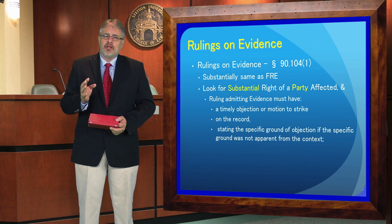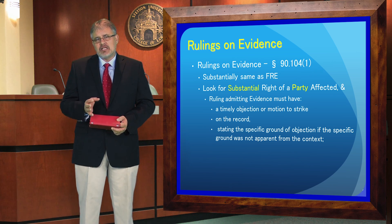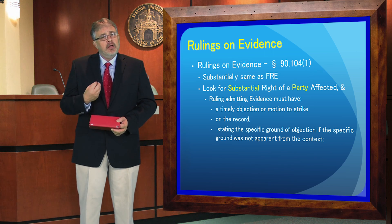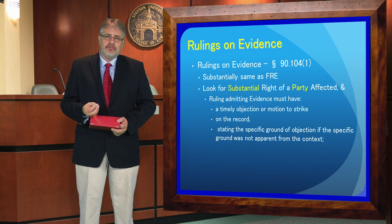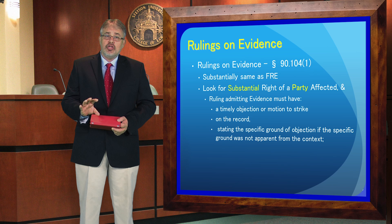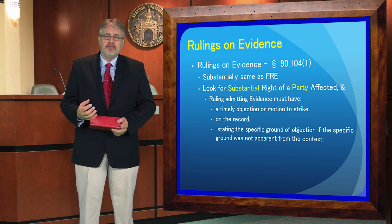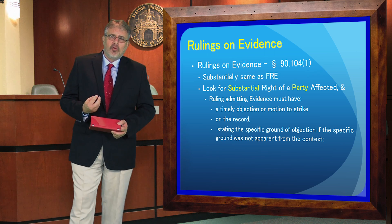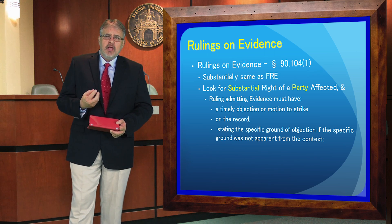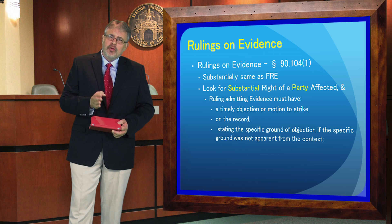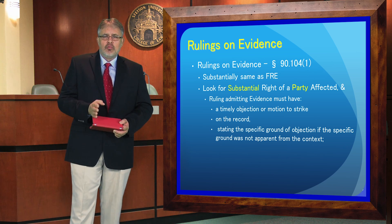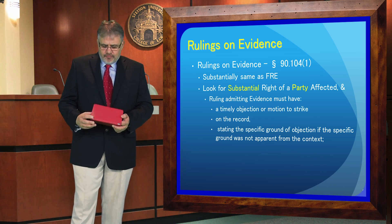This particularly comes into play when you have a hearsay statement for which you don't have an acknowledged exception or exclusion that would normally let it be used. The Florida Evidence Code, on the other hand — Florida Rule 90.104 — is different in that the Florida rule only allows the Florida State judge to consider otherwise admissible evidence when determining the admissibility of a piece of evidence. This is a limitation that exists in the state of Florida that doesn't exist at the federal level, and it has to do with the way Florida perceives the role and function of the judge as opposed to a federal courthouse.